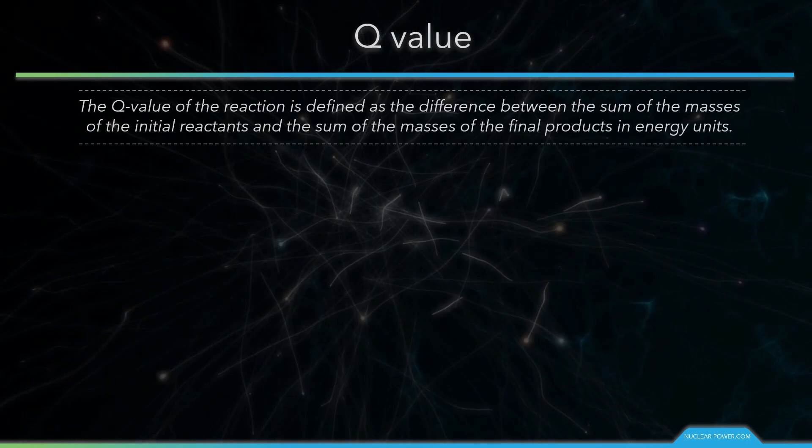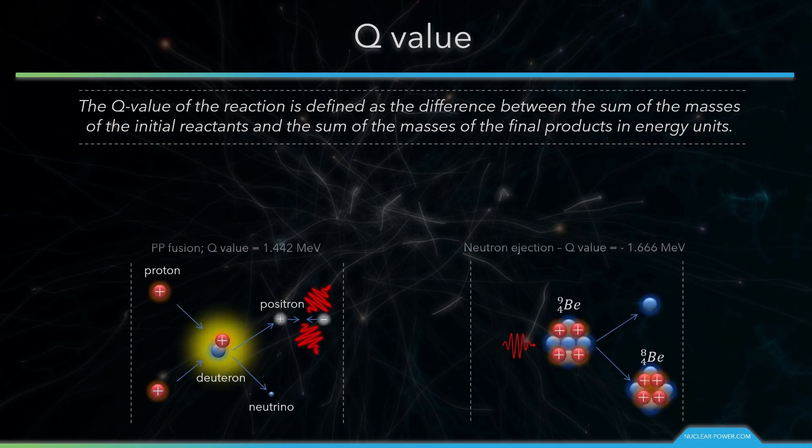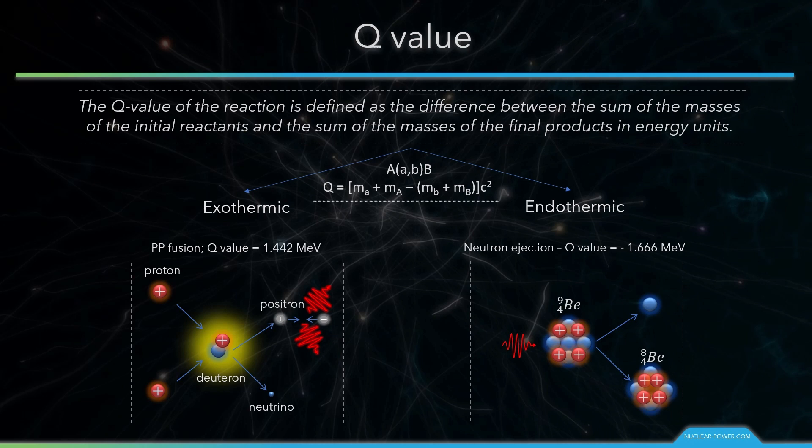In nuclear and particle physics, the energetics of nuclear reactions are determined by the reaction's Q value. The Q value of the reaction is defined as the difference between the sum of the masses of the initial reactants and the sum of the masses of the final products in energy units, usually in megaelectron volts. For reactions in which there is an increase in the kinetic energy of the products, Q is positive. The positive Q reactions are said to be exothermic. Proton-proton fusion is an example of an exothermic reaction.